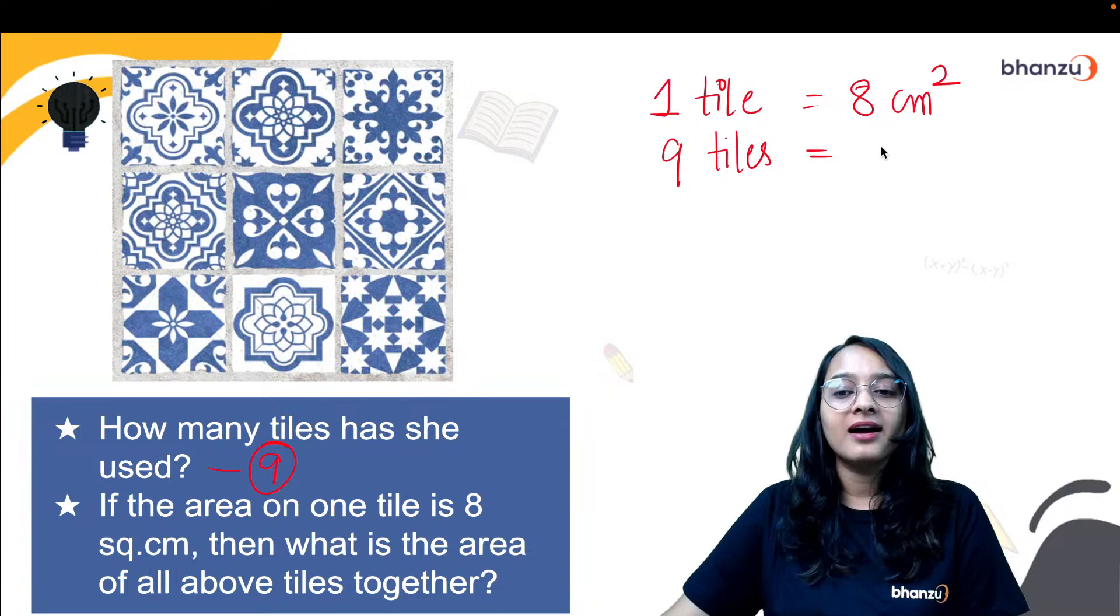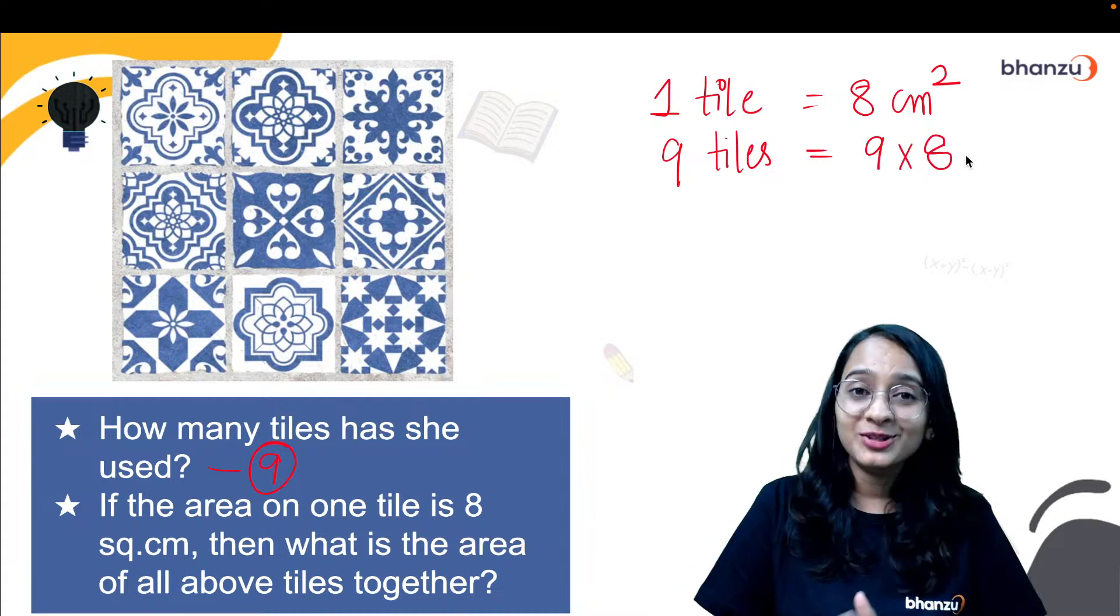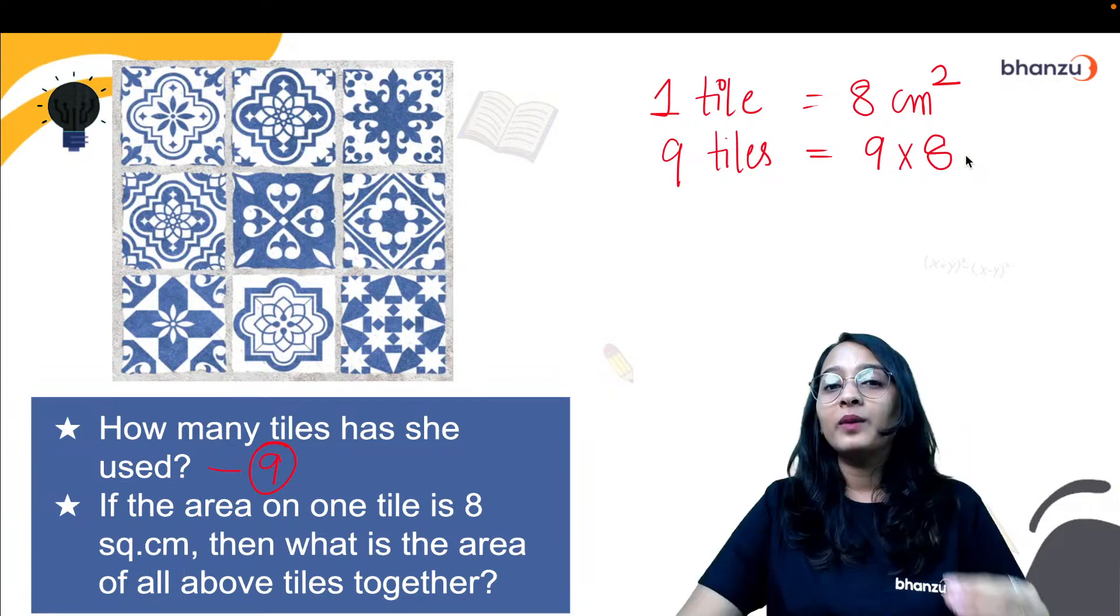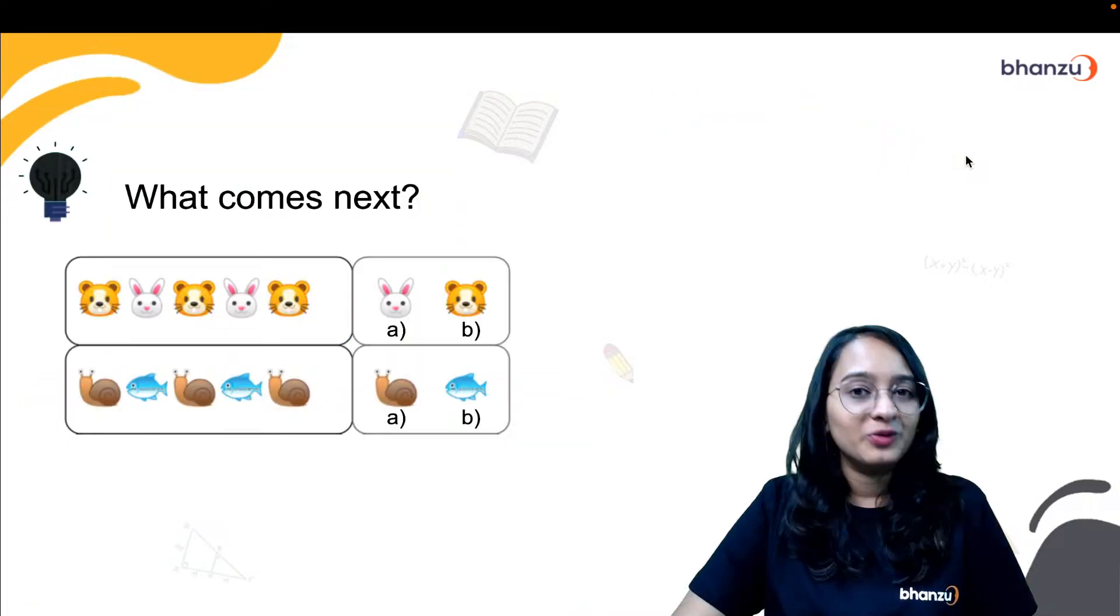Now what is happening if the area of one tile is 8 centimeter square, one tile is 8 centimeter square. The area of a unit tile is given. Now we want to find out the area of the entire region. The entire region is covered with 9 tiles. So what would be the total area? 9 multiplied with 8. Now in our Bhanzu curriculum, just like the NCERT curriculum, we also have a Bhanzu curriculum where we make math an easy peasy subject for all of us. We learn math in a very different way. How? I'm going to tell you very soon.